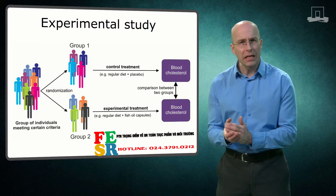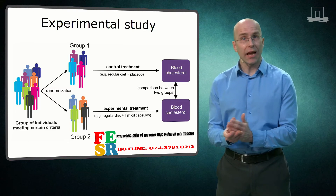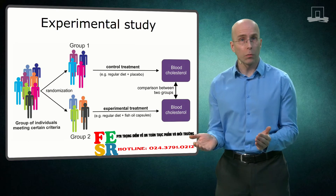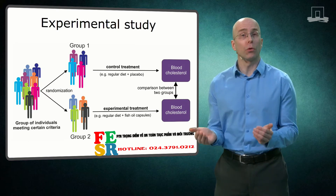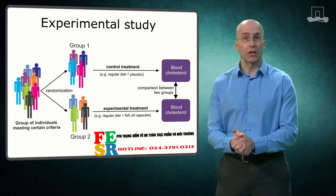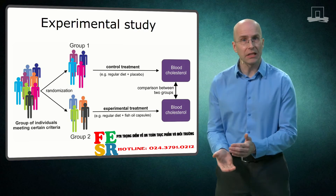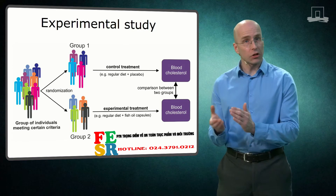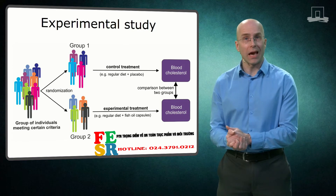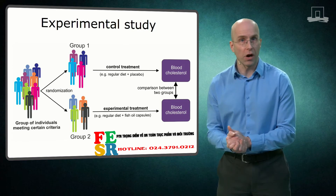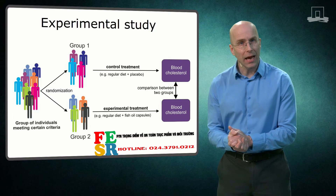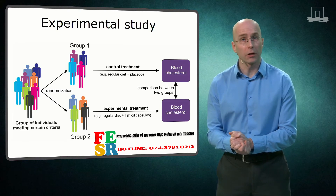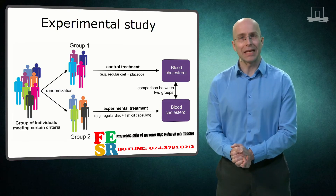A dietary intervention can also be just advice. For instance, one group of individuals is advised to consume more fiber-rich foods, such as whole wheat bread instead of white bread, brown rice instead of white rice, whereas the control group is asked to stick to the low-fiber varieties. In that case, it's important that you have an effective system to monitor compliance to the recommendations.